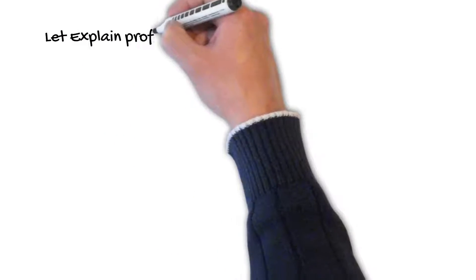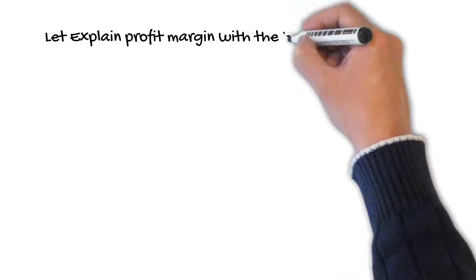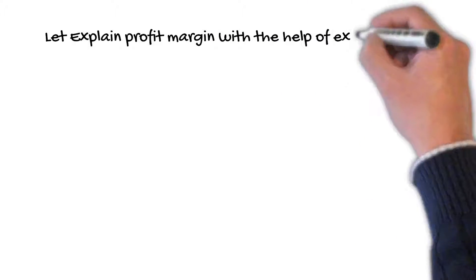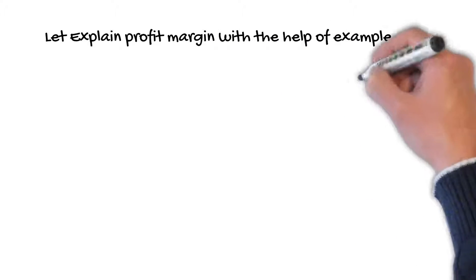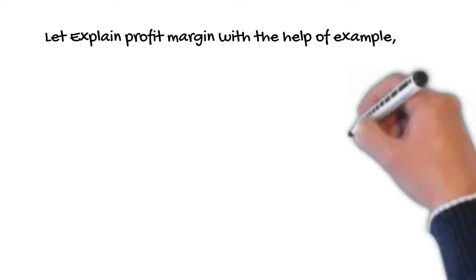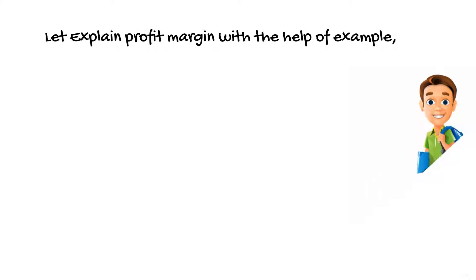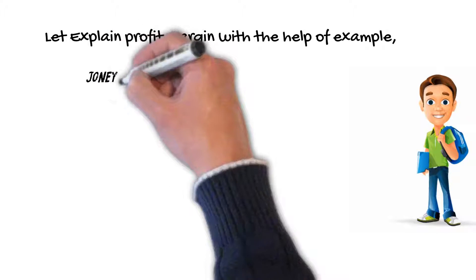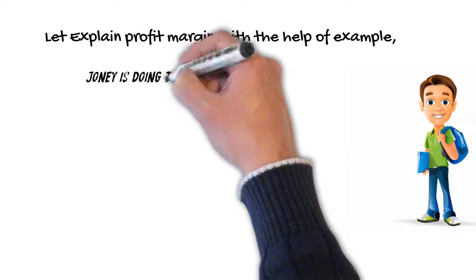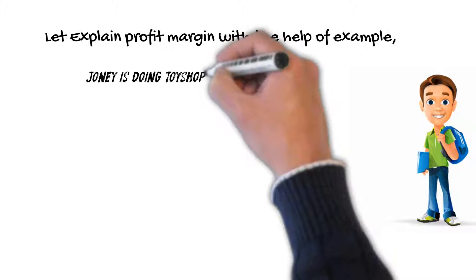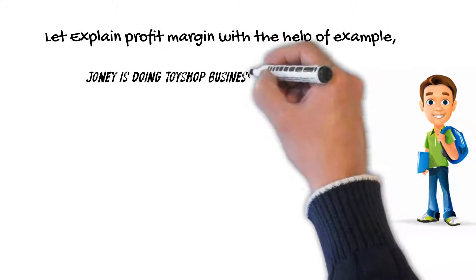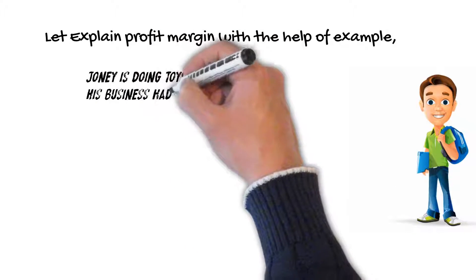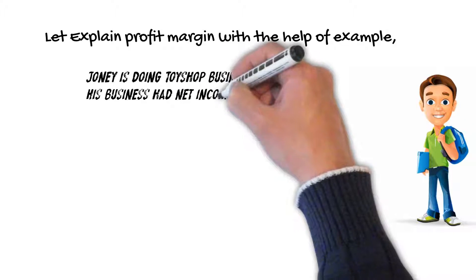Let's explain profit margin ratio with the help of a real-world example. Joni is doing toy shop business. His business had net income of $50,000 and net sales of $120,000. The profit margin for Joni's business is equal to 41.7%.